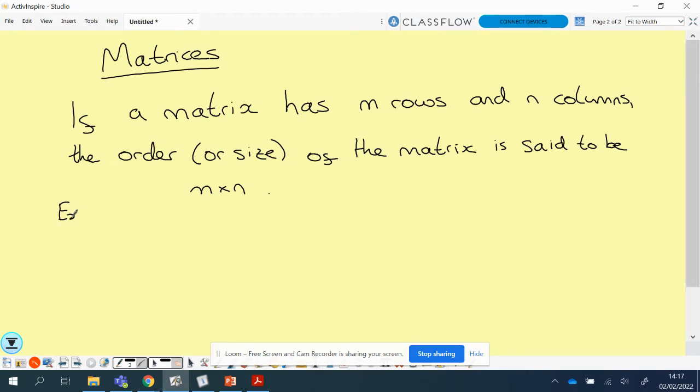So if I give you the example 1, 2, minus 3, 4, 6, 1, then this is what's known as a 2 by 3 matrix. It's got two rows and three columns.